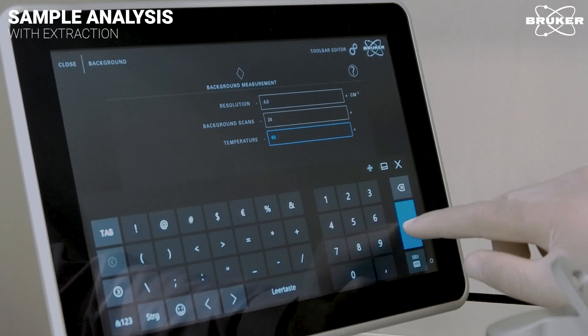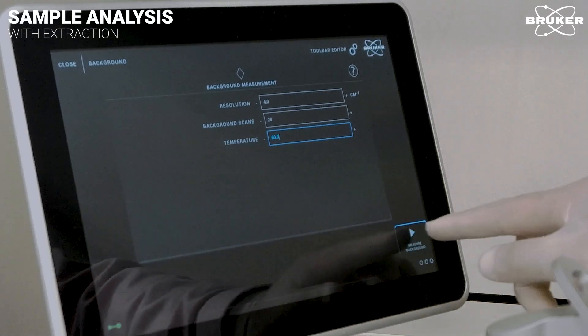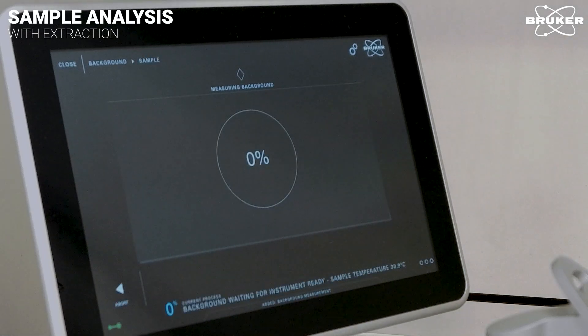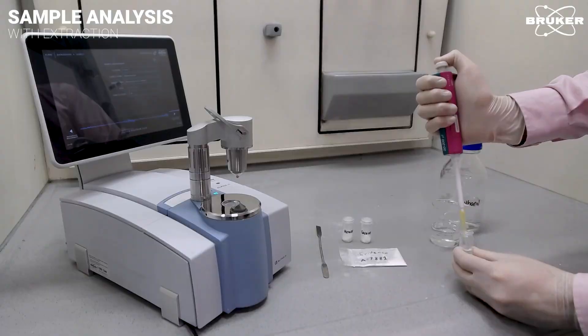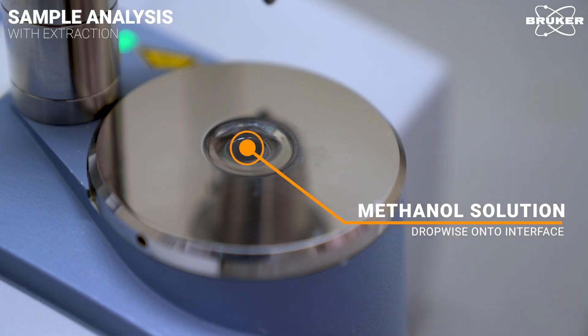For this experiment, we set the temperature just below the boiling point of methanol. After that, the background is measured without any sample present. Then, a pipette is used to apply the methanol solution dropwise onto the heated measurement interface.